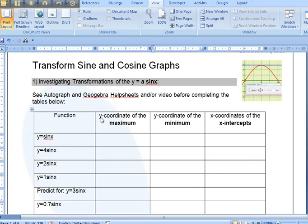For these functions we need to find the y-coordinate maximum, the maximum value of the y coordinates and the minimum value of the y coordinates and record them in the sheet. And then hopefully we'll see a pattern and we can predict for this one, y equals 3 sine x, without using GeoGebra, what's going to happen.